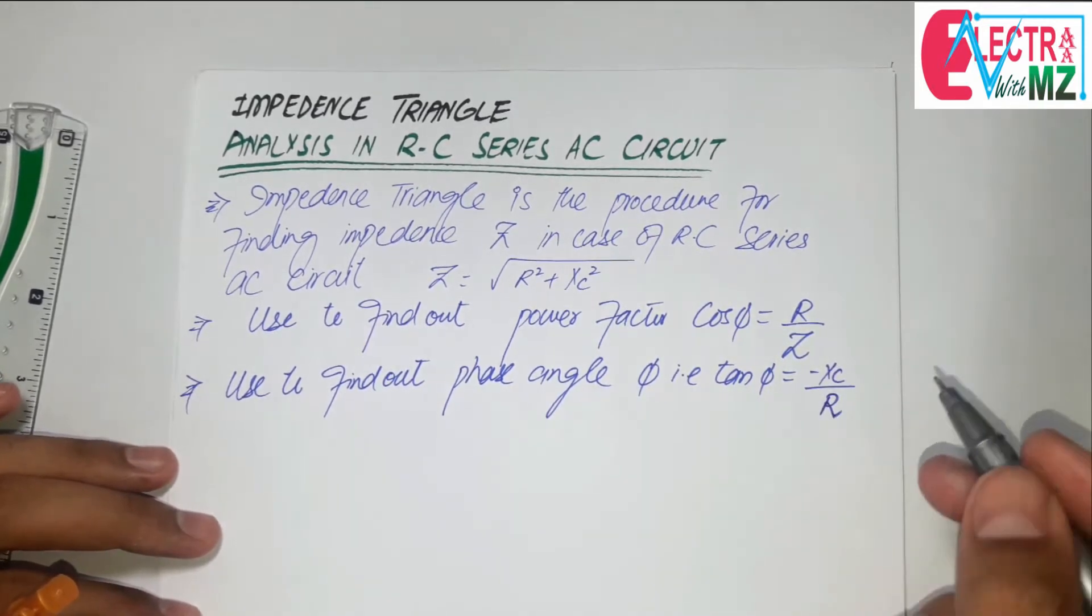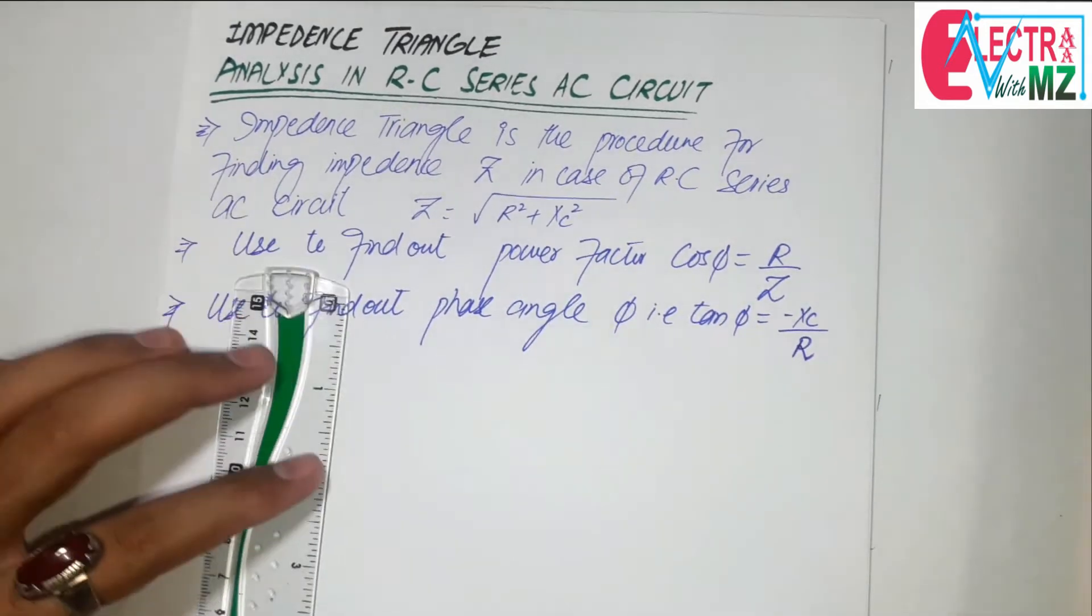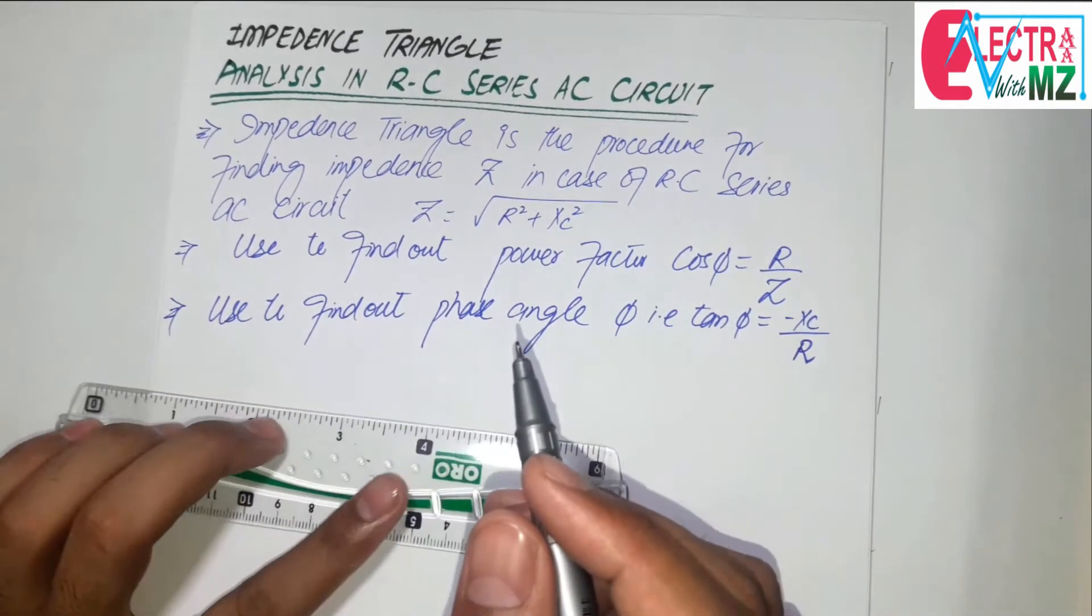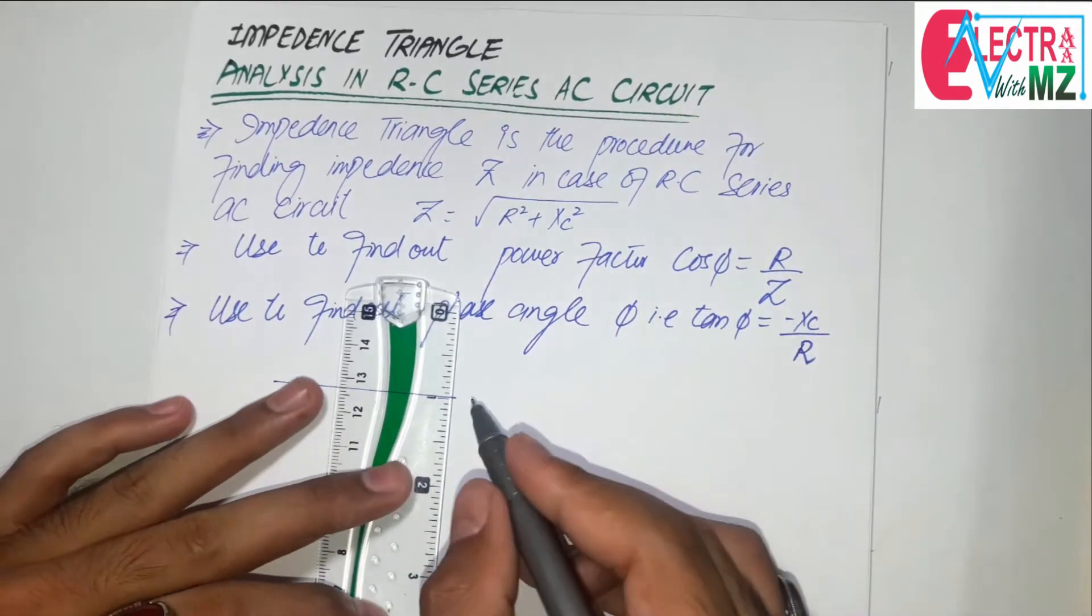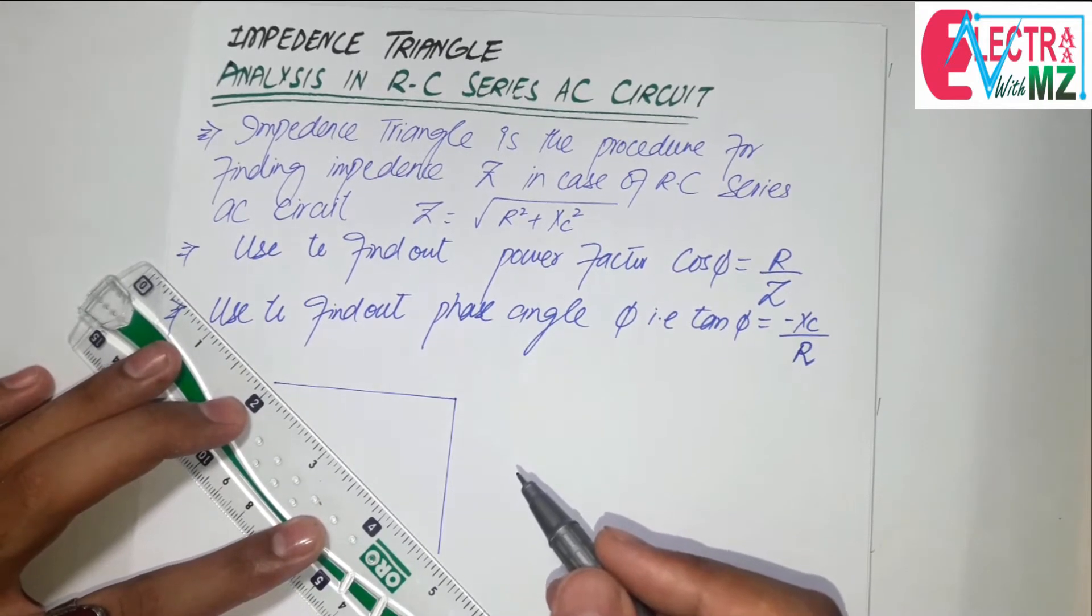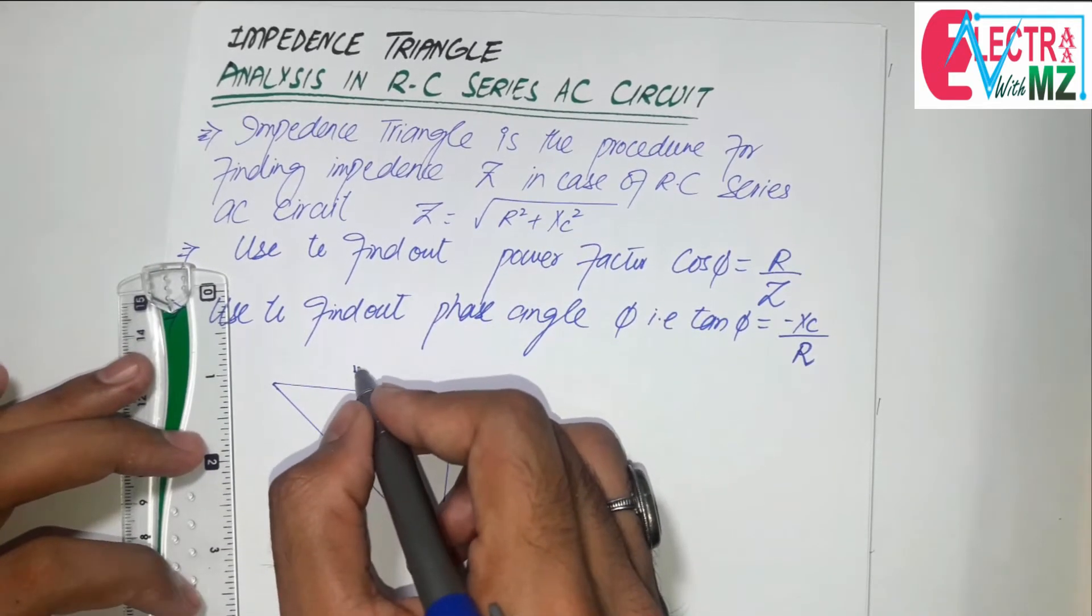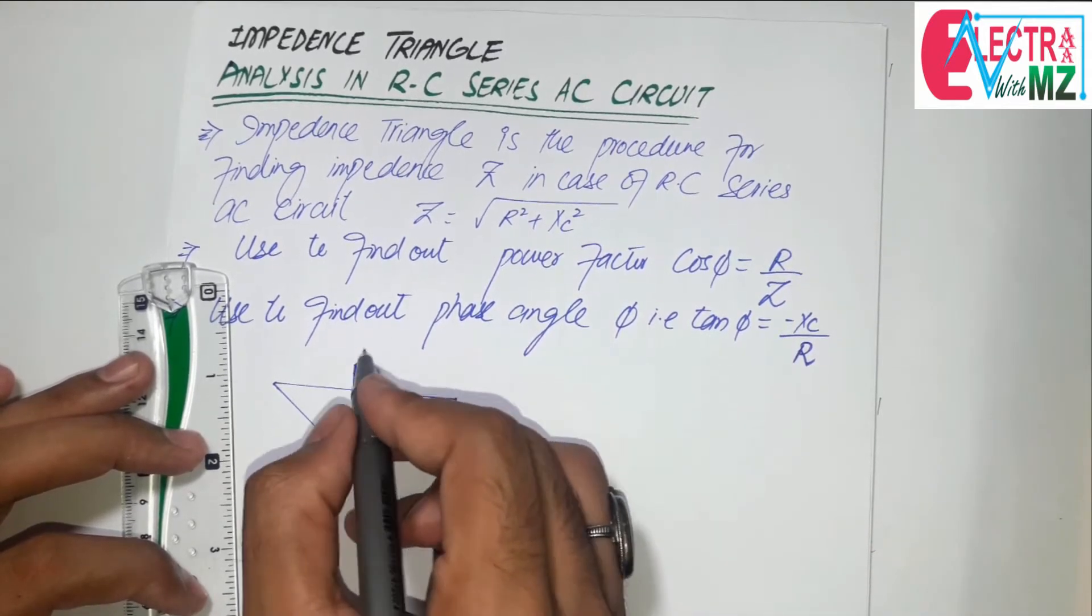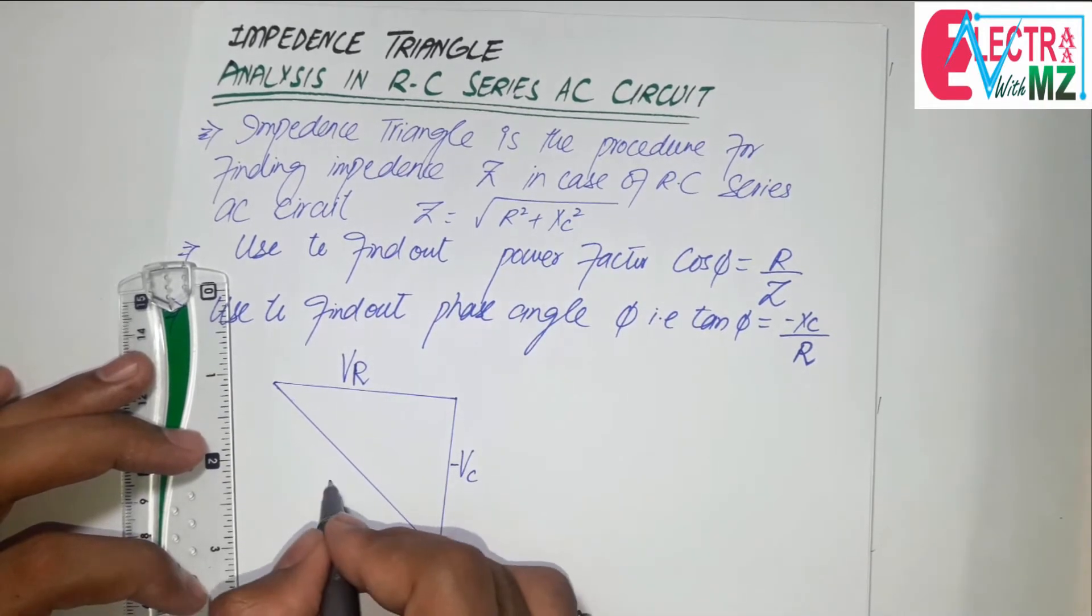So as we know that the phasor diagram for RC series AC circuit is: this is the VR, this is the VC, and this is the V.